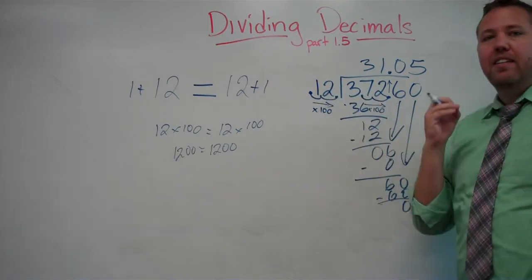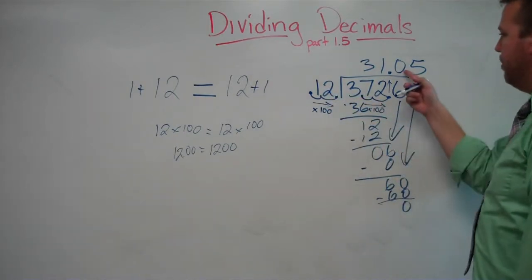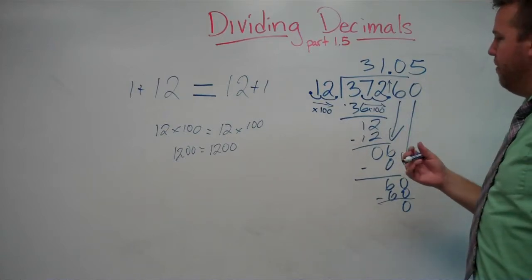And also, when you bring down, repeat. 12 goes into 6, 0 whole time. So, make sure the 0 comes up in that dividend.